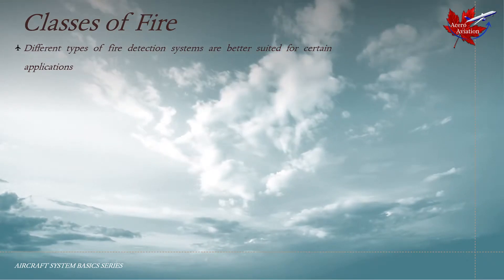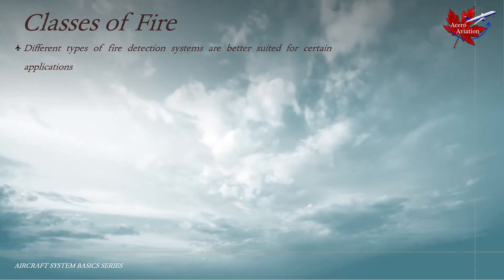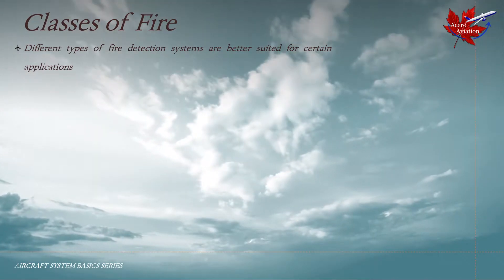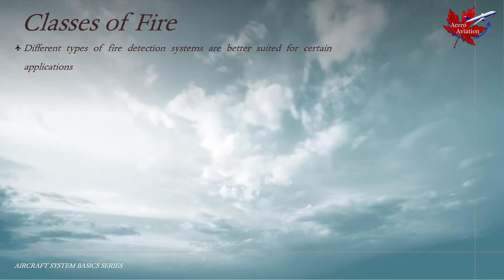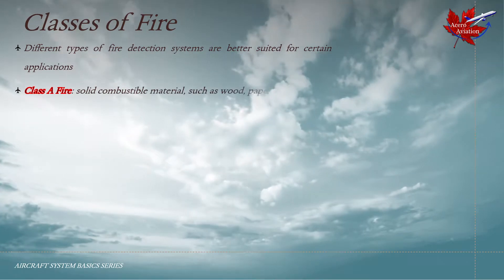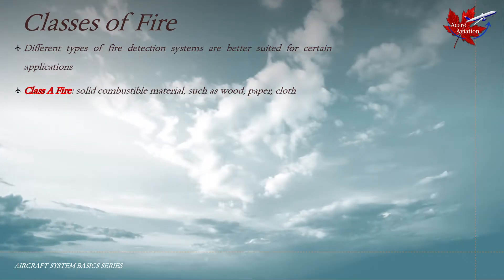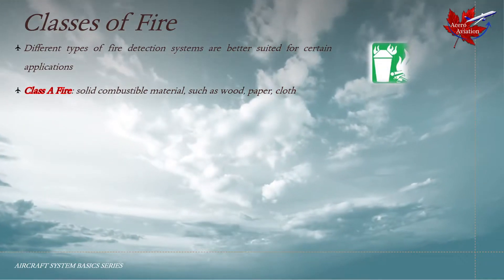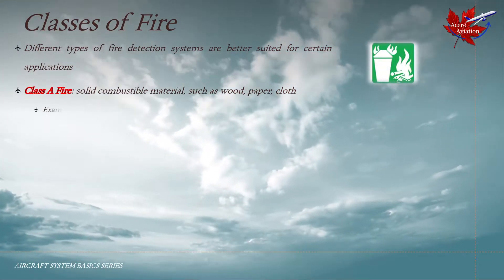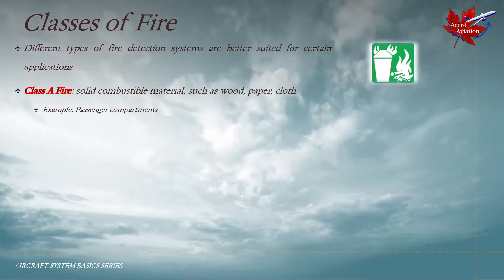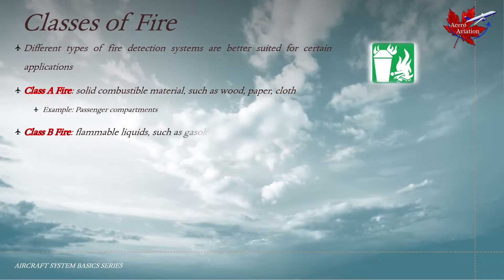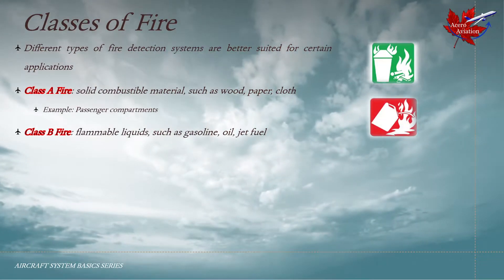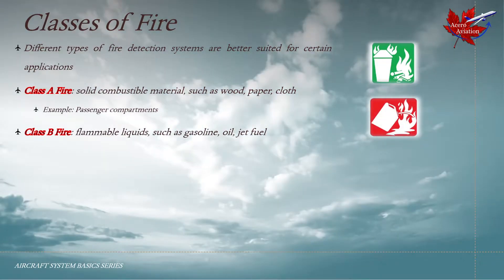To understand how and why different types of fire detection systems are better for certain applications, we need to understand what kind of fire it is in the first place. A Class A fire is caused by a solid combustible material burning, such as wood, paper, or cloth. This kind of fire could occur in passenger compartments. A Class B fire is caused by flammable liquids such as gasoline, oil, jet fuel, or paint thinners and solvents used in aviation maintenance.